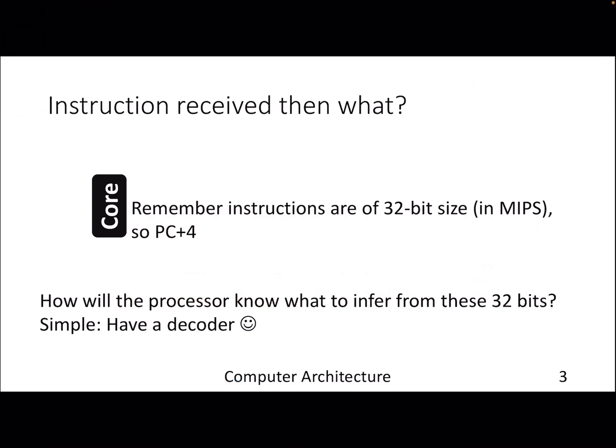We have discussed that instructions in MIPS are of 32-bit size. That's why we are jumping with an offset of four when executing instructions. At this moment, we can assume that as a processor, we have received a 32-bit instruction from memory, but we don't know what to do with these 32 bits. These are just a sequence of zeros and ones of length 32 bits. To infer or understand what exactly to be performed with these 32 bits, we need a decoder which can decode the various bits and tell the processor whether these are value operations, load instructions, branch instructions, or just a simple register operation.